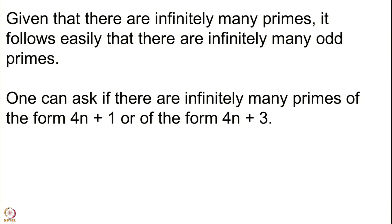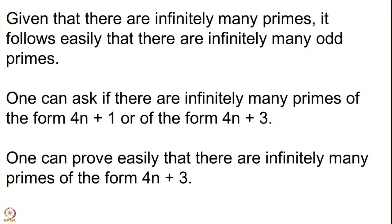Are there infinitely many primes of the form 4n+1, or infinitely many of the form 4n+3? We will first prove that there are infinitely many primes of the form 4n+3. The proof will follow the same line as before: we assume there are only finitely many, construct a number which must have a prime of the form 4n+3 dividing it that cannot be part of the assumed finite set, and thus obtain a new prime. This is the idea of the proof.